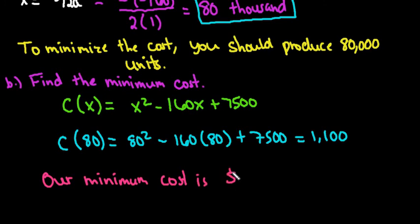We would say that our minimum cost to produce 80,000 units is $1,100. If you make more than 80,000, then you would have to pay more, the cost would increase. Or if you make less than 80,000, your cost would also increase. This is like that perfect value. The minimum cost to produce whatever this product is is $1,100.